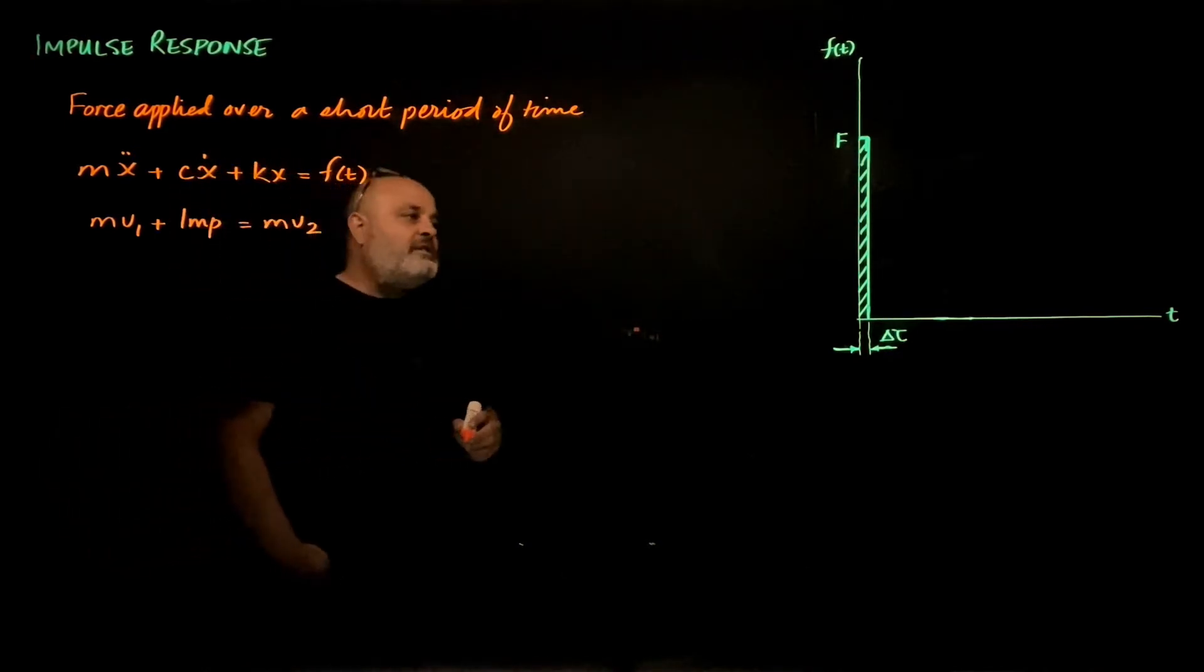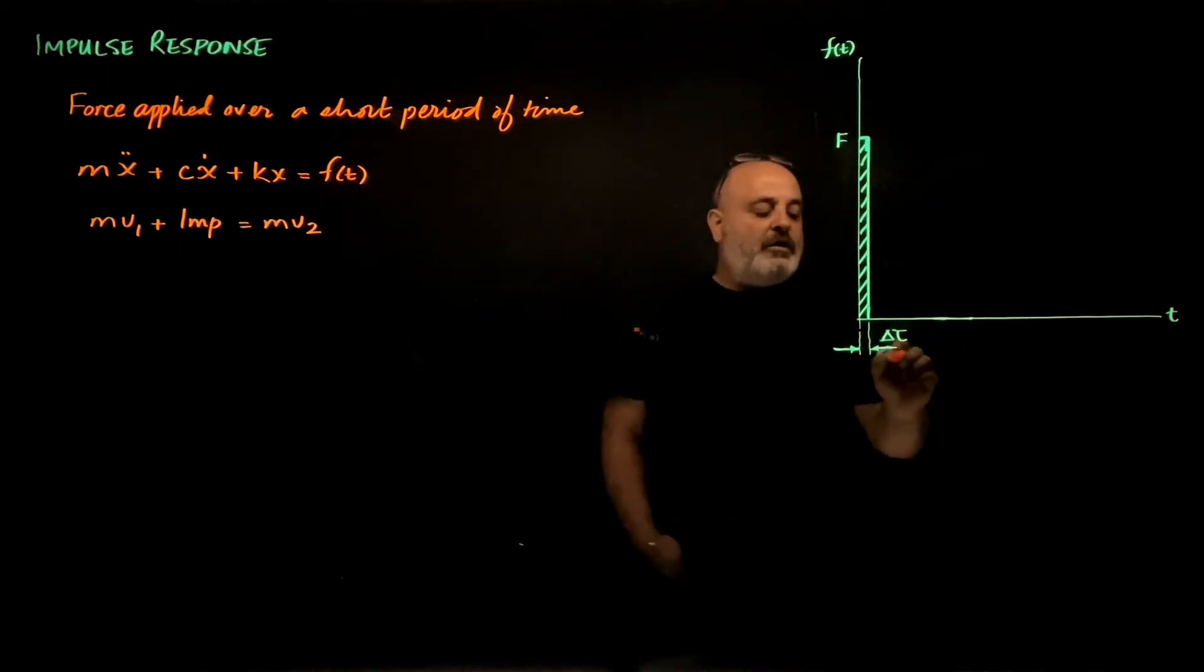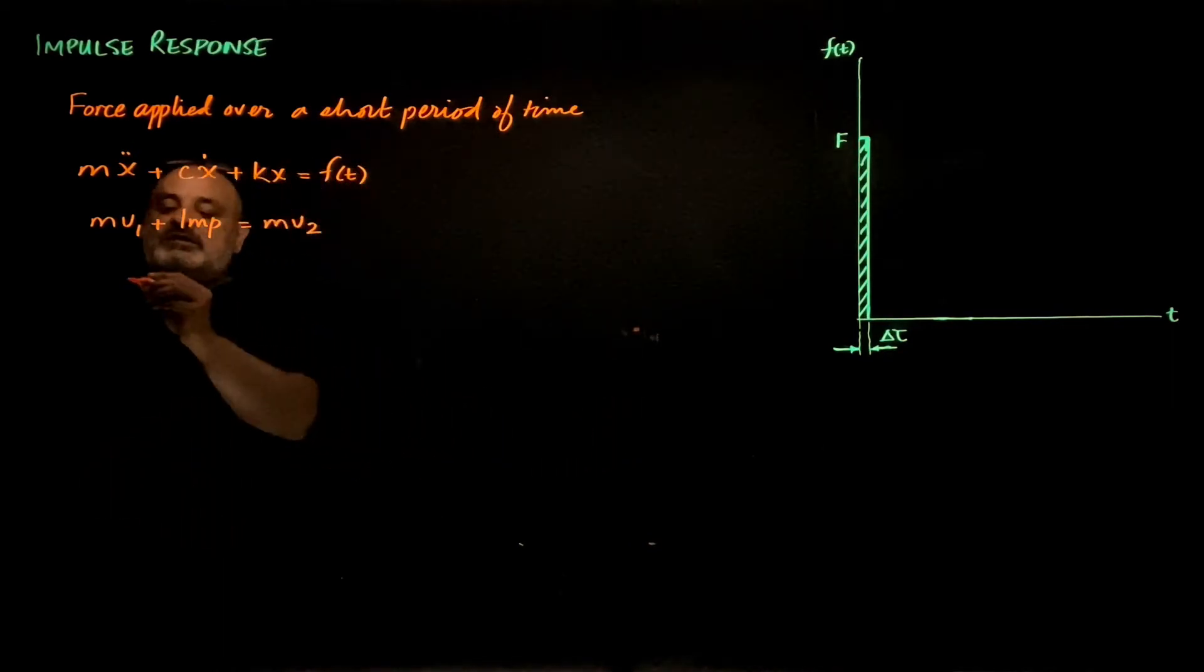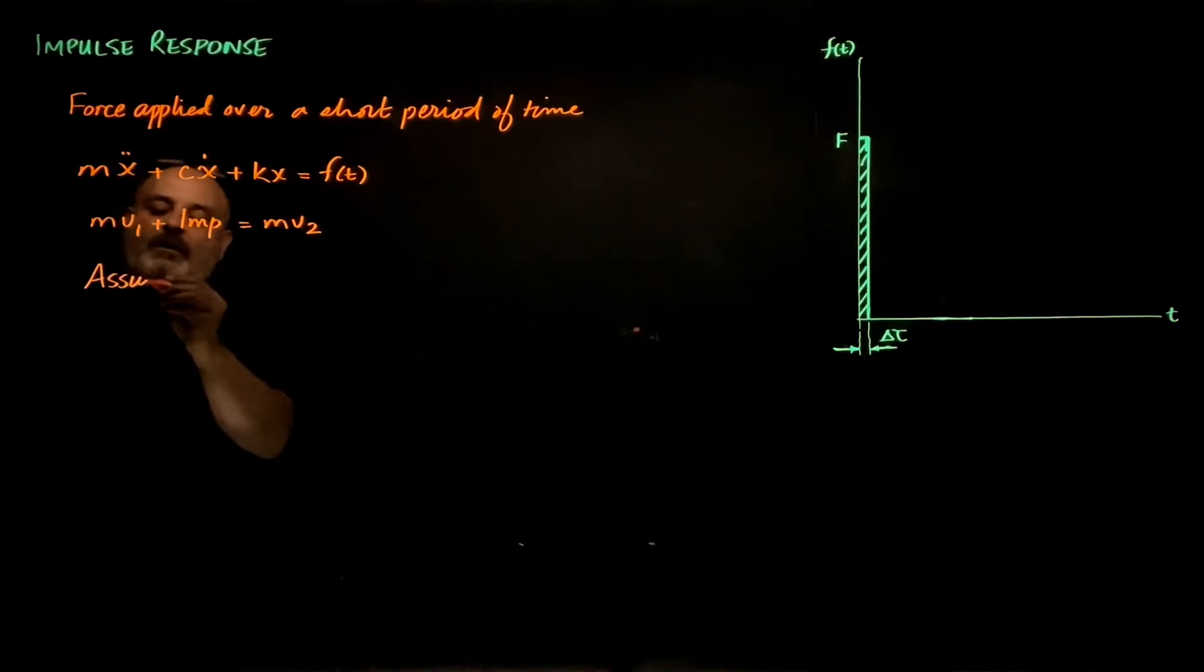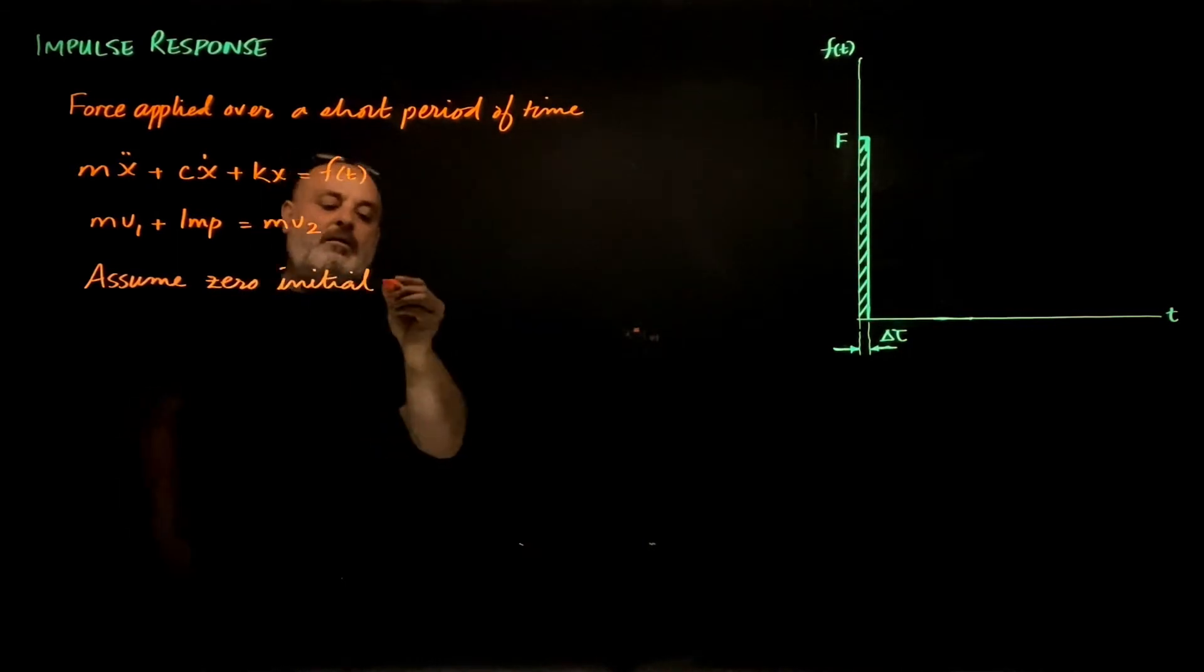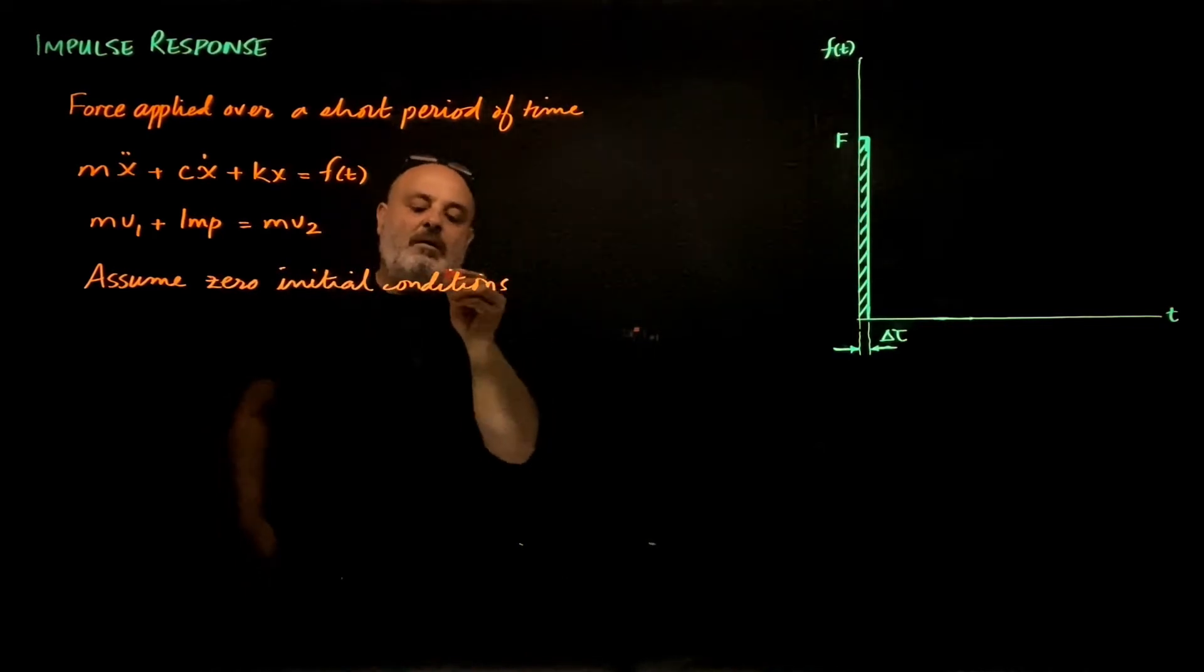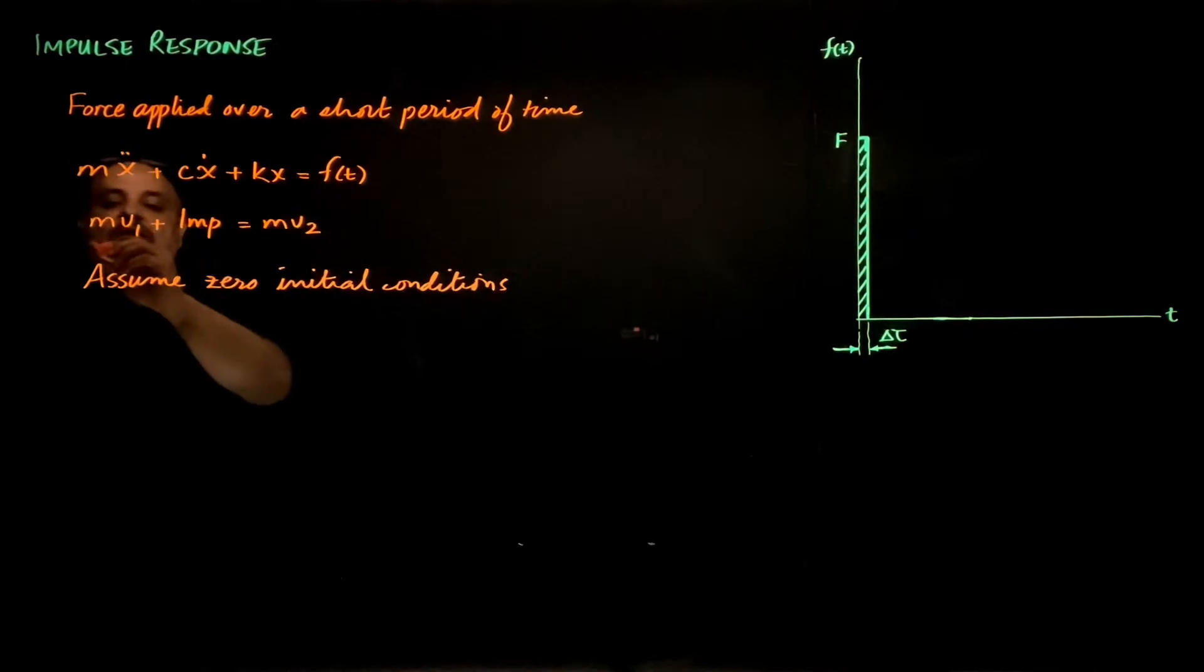Now our impulse here is a force of magnitude f applied over a period of time delta tau. Assuming that we start from zero initial conditions, mv1 is zero.